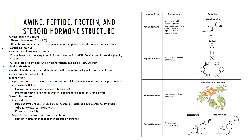Hormones can be amine, peptide, protein, or steroid in structure. Amino acid derivatives are hormones derived from a single amino acid, such as the thyroid hormones thyroxine and triiodothyronine. Peptide hormones are short chains of amino acids; an example is antidiuretic hormone, composed of nine amino acids.